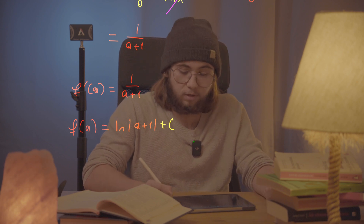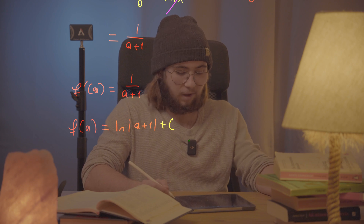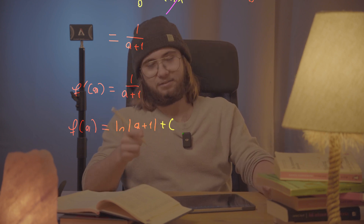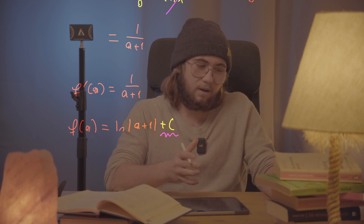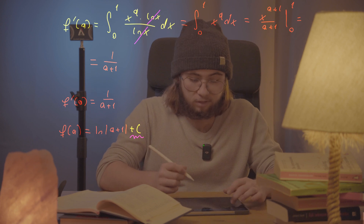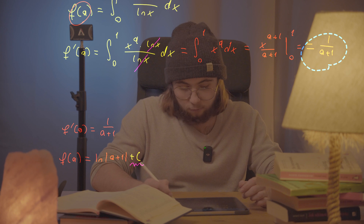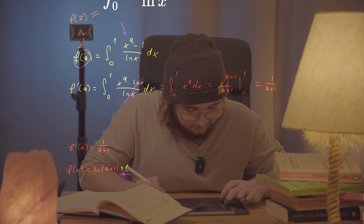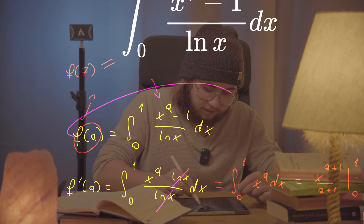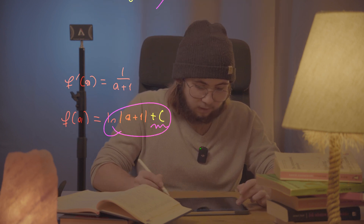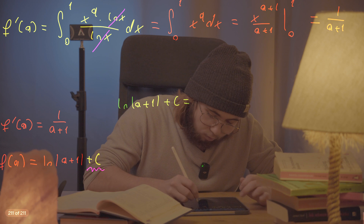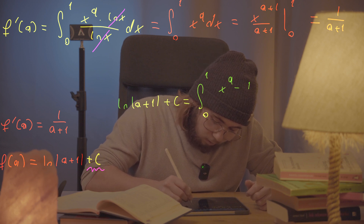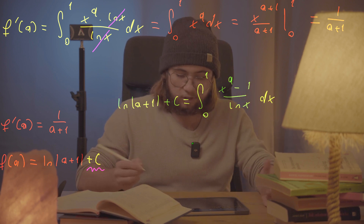How do we figure out the value of the constant C? It will probably affect our solution quite a bit. The key insight is that f(a) is simultaneously equal to the expression ln|a+1| + C and also equal to the original integral. So those two are equal to each other: the natural log of the absolute value of (a+1) plus C equals the integral from zero to one of (x^a minus one) over the natural log of x dx.